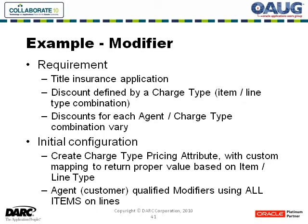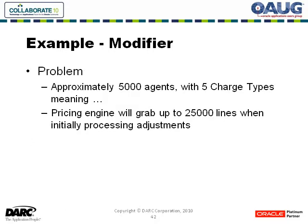In some cases, additional information was required to determine the exact rate type, which would then define the discount. In this particular region, they had seven rate types defined. With approximately 5,000 agents, we were looking at a total of 35,000 to 40,000 modifier lines, because each agent might have their own plan and the information was maintained for each agent specifically. The initial configuration created a charge type pricing attribute using a custom function to evaluate what that attribute should be, with modifier lines for each agent using the product definition of all items. The problem was 5,000 agents with 5 to 7 charge types.